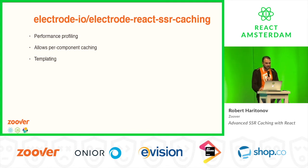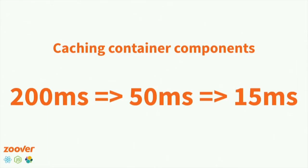As promised, here are some numbers of what you can achieve. Given that 200 milliseconds could be the initial average response time from the server, caching just data, you can achieve around 50 milliseconds. But by also caching the results of server-side rendering, you can get even further — down to around 50 milliseconds — which is a lot better and will of course provide a better user experience for your clients.